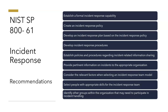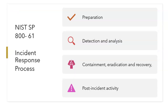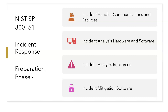Section 3 of the document is very important as it covers how to handle an incident — specifically the phases of the incident response process. The major phases are: preparation, detection and analysis, containment/eradication and recovery, and post-incident activity. The first phase, preparation, focuses on establishing an incident response capability so that the organization is ready to respond to incidents, and also helps prevent incidents by ensuring systems, networks, and applications are sufficiently secure.